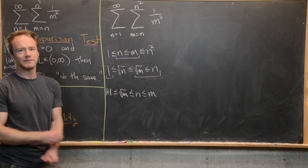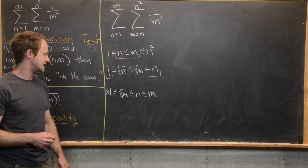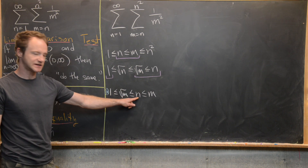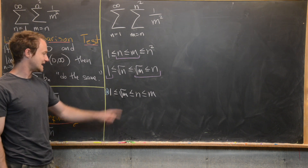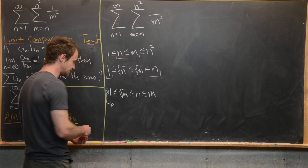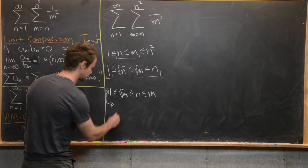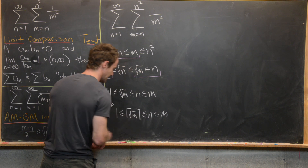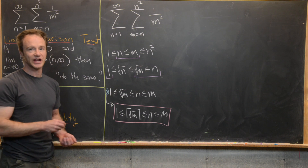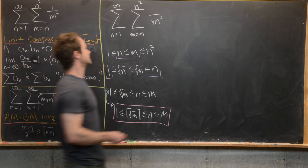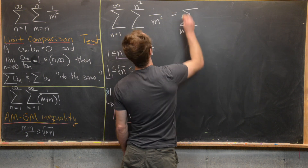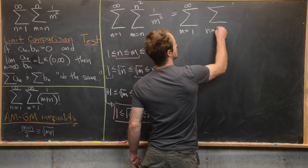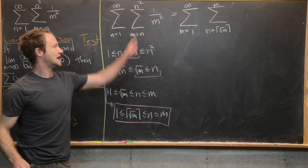You might look at this and say, well, m is not always a perfect square, so the square root of m is not always a positive integer. But what we can see is that if n is bigger than or equal to the square root of m, and n is a positive integer, that means n is bigger than or equal to the ceiling of the square root of m. So we can transform this inequality into one which only has positive integers: one is less than or equal to the ceiling of the square root of m, which is less than or equal to n, which is less than or equal to m. This is exactly the inequality we need to change the order of summation. So now we're going to have the outer sum as m goes from one to infinity, and then the inner sum as n goes from the ceiling of the square root of m all the way up to m, with one over m squared.